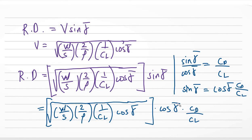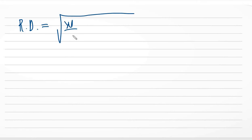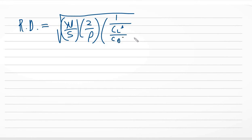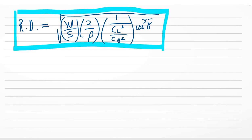Bringing the cosine gamma-bar and C-sub-D over C-sub-L inside the square root: cosine becomes cosine-squared and combined with the existing cosine gives cosine-cubed; C-sub-D becomes C-sub-D squared and C-sub-L becomes C-sub-L squared inside the square root. So the final formula for rate of descent is: R-sub-D equals the square root of (W/S) times (2/rho) times (1 over (C-sub-L cubed over C-sub-D squared)) times cosine-cubed gamma-bar.